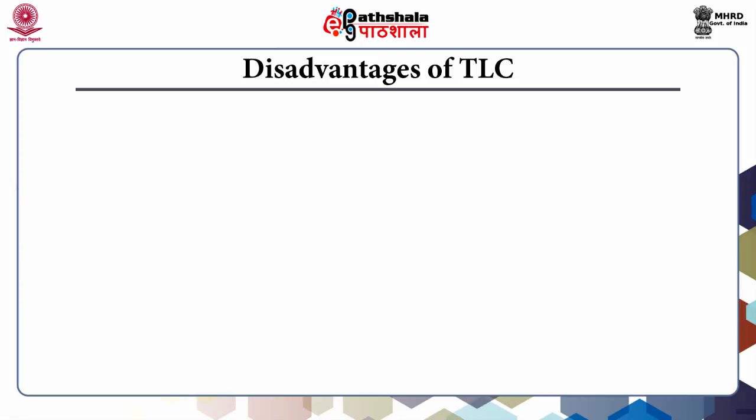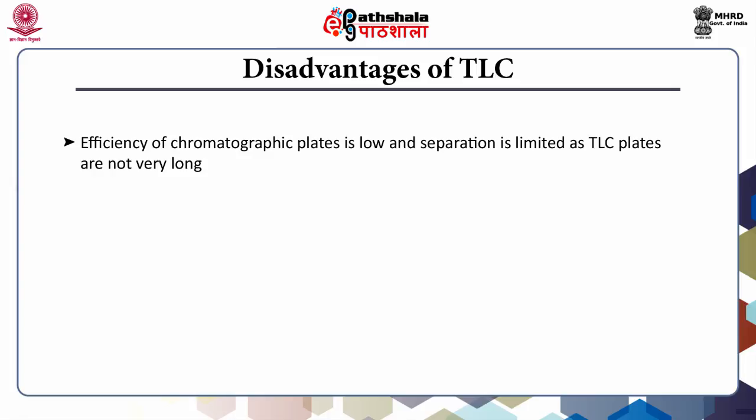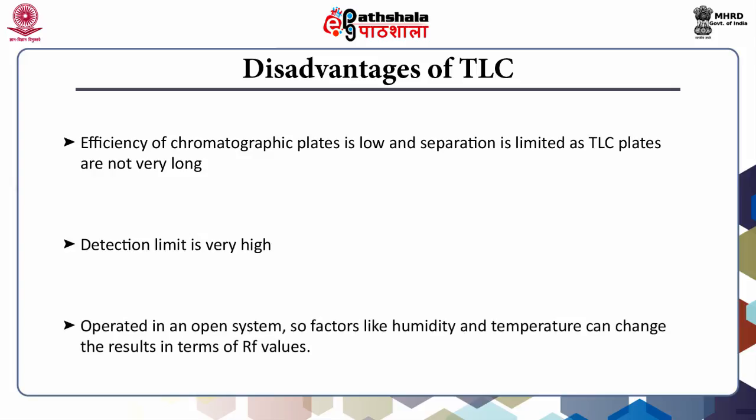Disadvantages of TLC: TLC plates are not very long, so the stationary phase is limited, meaning the efficiency of the chromatography plate is low and separation is limited compared to other chromatography techniques. Second, the detection limit in TLC is very high, meaning you cannot identify compounds at very low concentrations. Third, TLC is operated in an open vessel, so environmental factors like humidity and temperature can change the results in terms of Rf values, giving different Rf values under different environmental conditions.